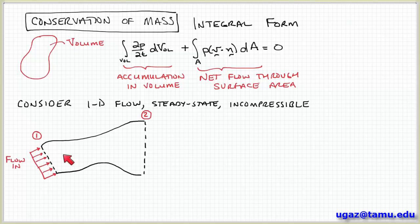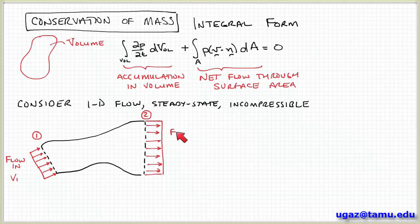So if I draw the flow going into this pipe, the velocity is uniform over the cross-sectional area at some value V1. And then the flow exits here at point two with some velocity V2.